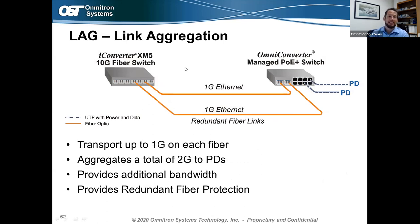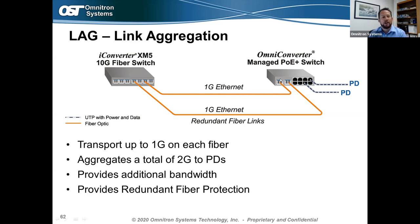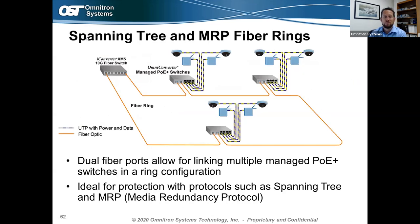Link aggregation (LAG) can be done with managed Omni Converter or RuggedNet PoE switches. Transporting one gig Ethernet on each of two redundant fiber links to the switch aggregates a total of two gigs of data to all PoE-powered devices, providing additional bandwidth as well as a redundant fiber path.